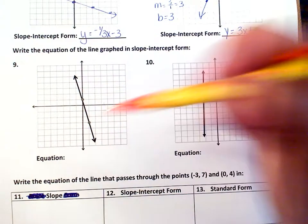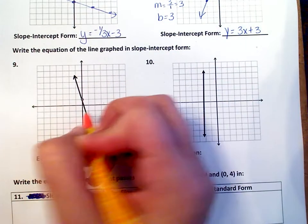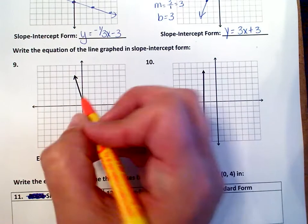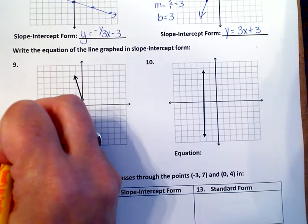So here's your line, here is your y-intercept, where it crosses the y-axis. That's positive 1, so b is 1.